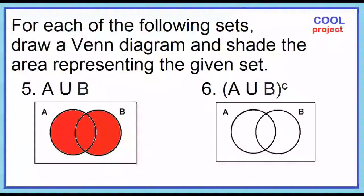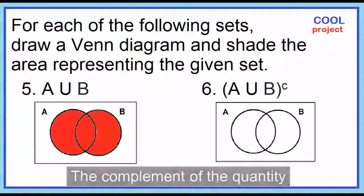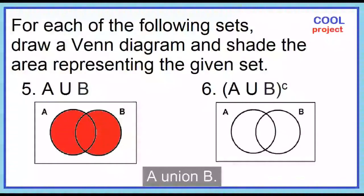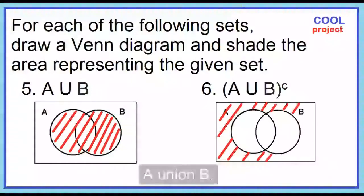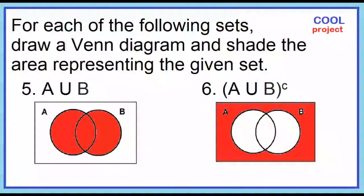Number 6. The complement of the quantity A union B. Shade the area excluding A union B. Number 5 represents A union B. Number 6 represents its complement.